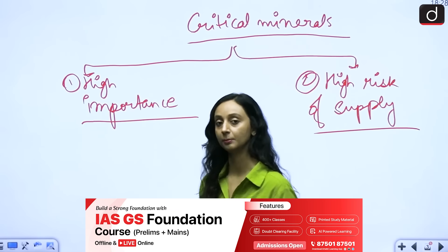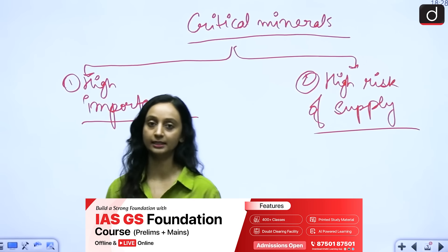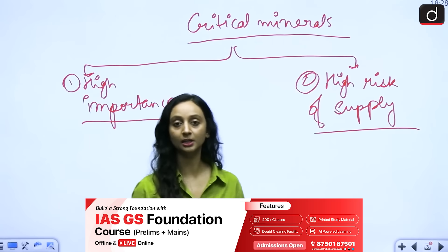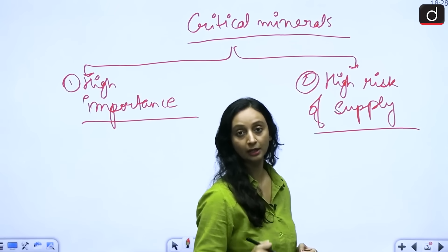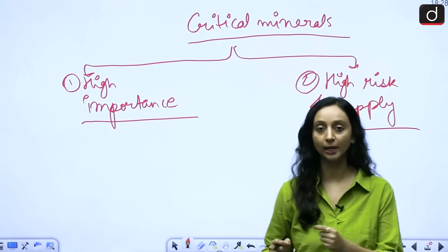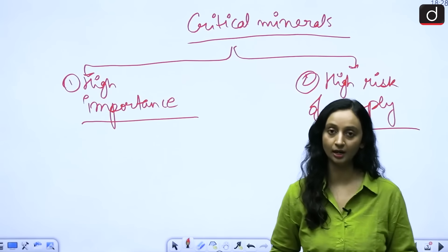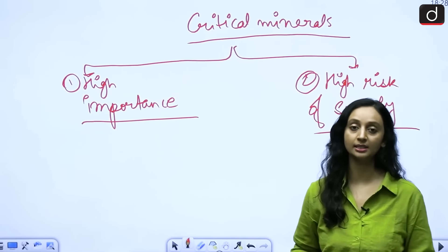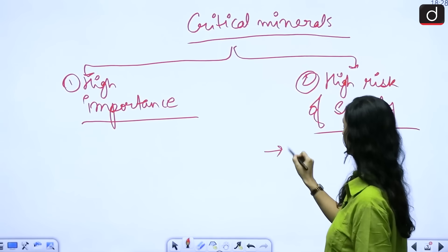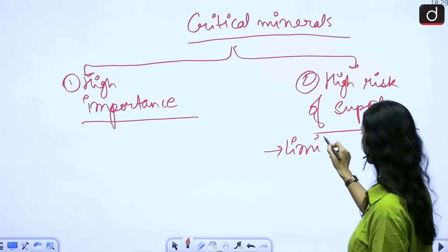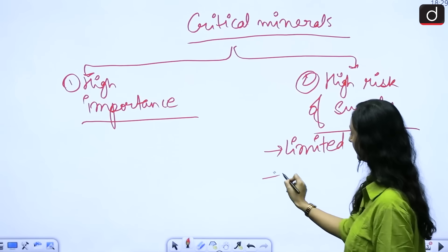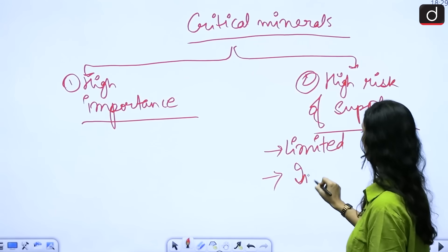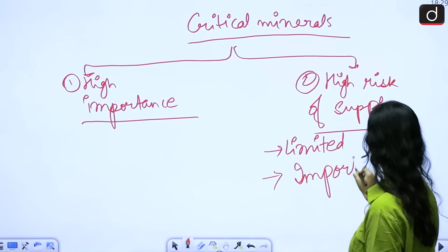The high risk of supply means that these minerals are not easily or widely available. And even if they are available, we do not have the technology to extract them and use them for our development. We lack adequate technology, which means these minerals are limited in availability, and even if available, we lack the technology — making us dependent on imports.